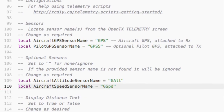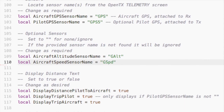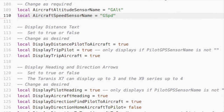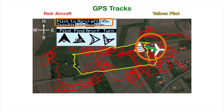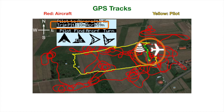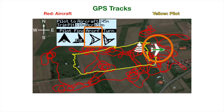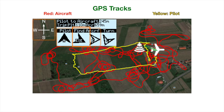The script reads optional altitude and speed sensors. These sensors are used for the return to home announcements. It displays a number of parameters, all of which are optional: the distance between the aircraft and the pilot, accumulated trip distance of the pilot and aircraft. These distances are in meters and kilometers. The heading of the pilot and aircraft.